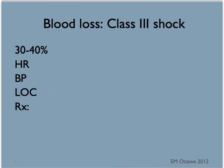Class 3 shock: when 30% to 40% of the blood volume is lost, the patient's heart rate will be even faster, the blood pressure drops even lower, and now the patient would have altered level of consciousness. They might be agitated and confused. In these patients, on top of crystalloid fluid, we would also be giving blood.